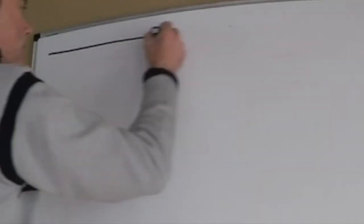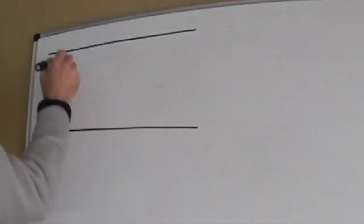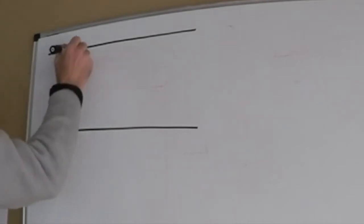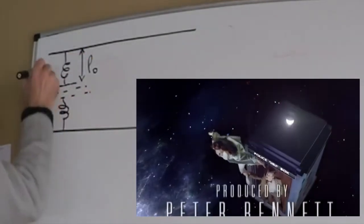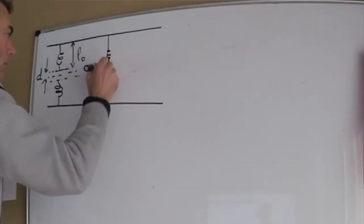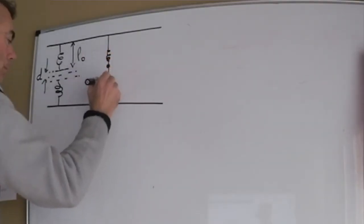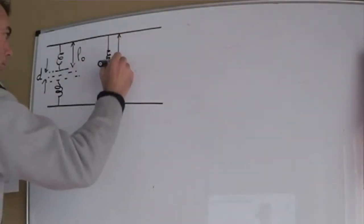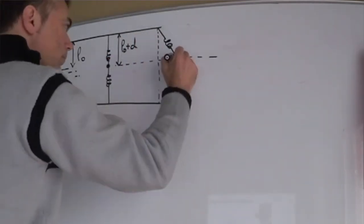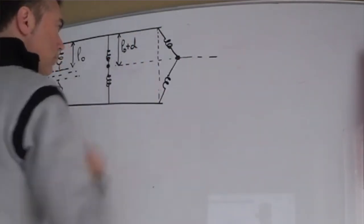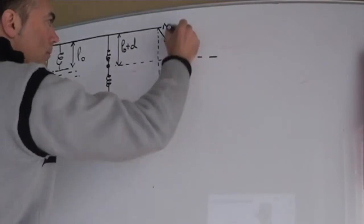Consider two springs of elastic constant k on the y-axis. There is no gravity in this problem — we're doing the experiment in deep space. We stretch the springs to join them to a mass m. We then move slightly the mass along the x-axis and let go. It will start to oscillate.